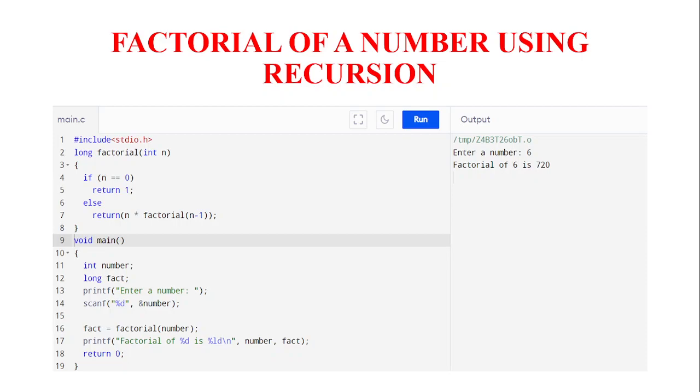Now what will happen is it will check whether the number is 0. So since it is not 0 it will go to the else part. I will get 6 into fact of 5. So once again the function will call itself now. Now fact of 5.